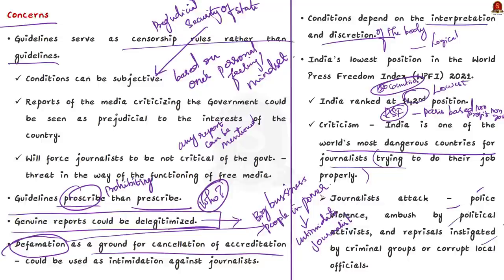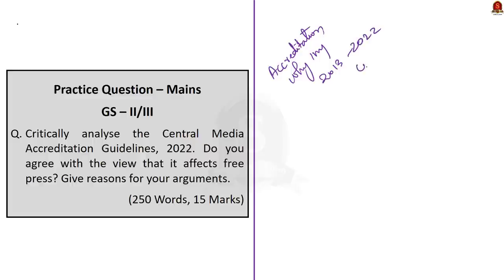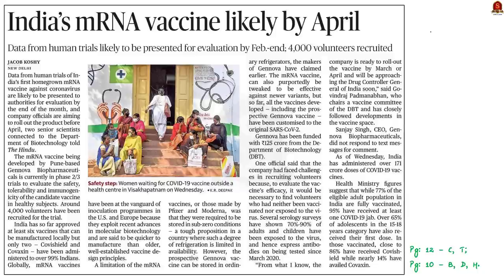On those lines, the new guidelines provide further opportunity for the government to punish journalists who are just trying to do their job. In this article discussion, we saw about accreditation of journalists, why it is important, the comparison between 2013 and 2022 guidelines, and some of the key concerns raised. Let us now move on to the next news article discussion.